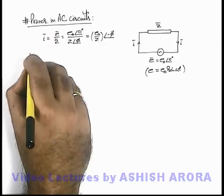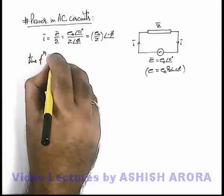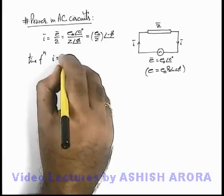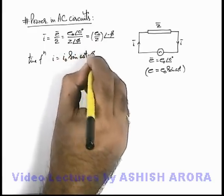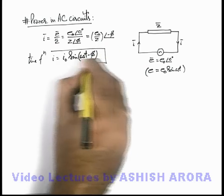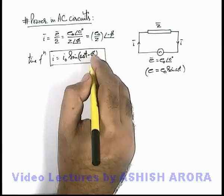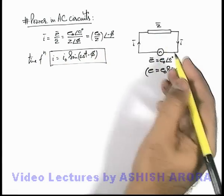So we can write time function of current can be written as i-not sine of omega t minus phi. Here the value of phi may be positive or negative depending on the value of Z.